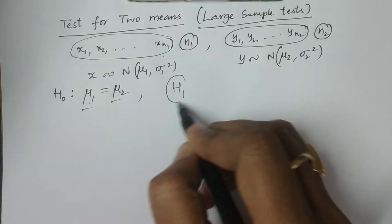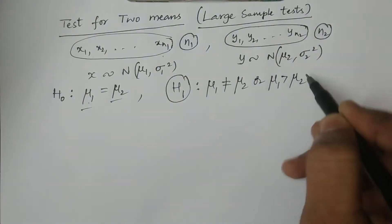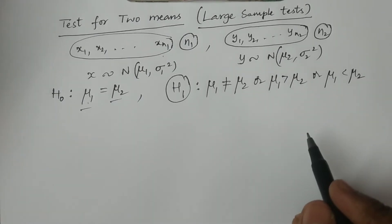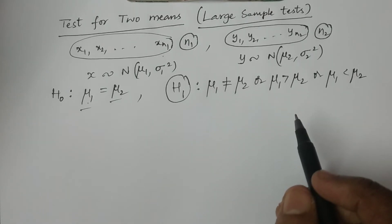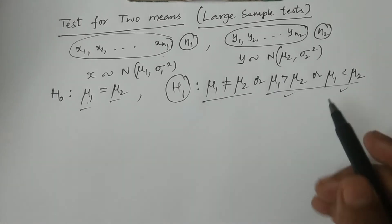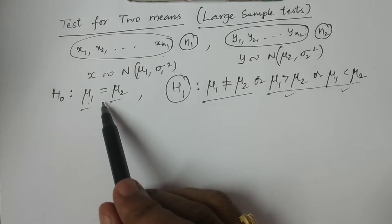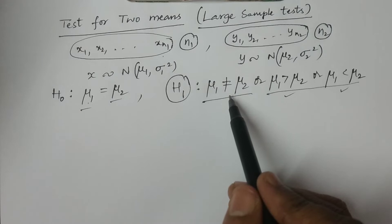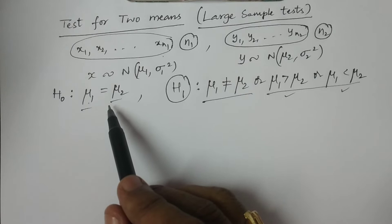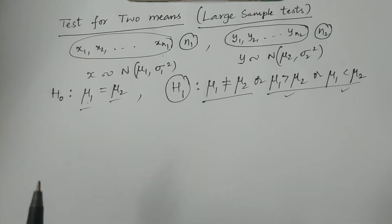If you consider the alternative hypothesis H1, it can be mu1 not equal to mu2, or mu1 greater than mu2, or mu1 less than mu2. The first refers to a two-tailed test; the second and third refer to one-tailed tests. When H0 states two population means are equal, H1 states they are not equal, or there is a significant difference between two sample means.